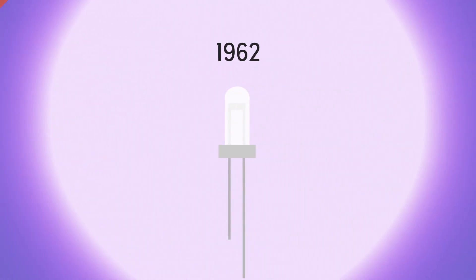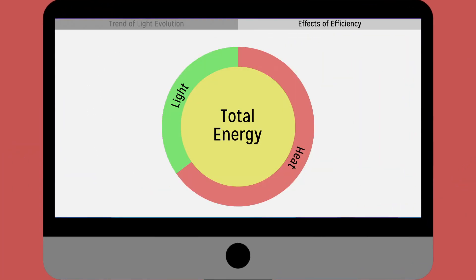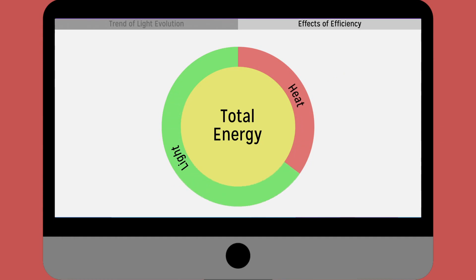LEDs are used in all modern electronic devices, and it seems that the trend of light evolution is heading towards energy efficiency, that is, less heat and brighter light.